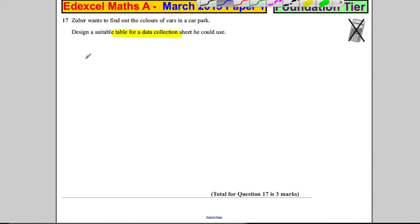So the first title would be colours. And in order to get the mark for colours, you have to list at least three colours of cars. So I'm going to say red, blue, yellow, silver, and other, something like that. They're the colours.